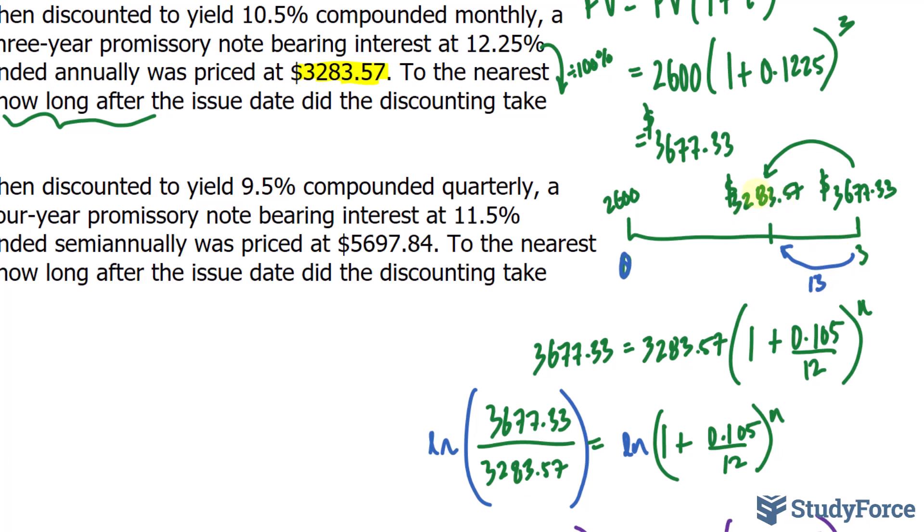Now, relative to the issue date, since it is a three-year promissory note, three years means 36 months. We take away from 36, 13 months. And what that gives us is 23 months. So, from the issue date to here is actually 23 months. That's the answer.